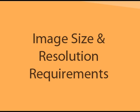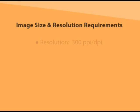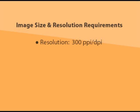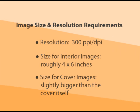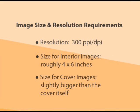First, let's briefly review the requirements, and then we'll go into Photoshop to check for them. If you are submitting images for your book's cover or interior, they need to have a resolution of no less than 300 ppi, or pixels per inch. In addition, images for your interior need to be roughly 4 by 6 inches or larger. If they're for the cover, they should be slightly bigger than the cover itself, adding at least an eighth of an inch to the cover's top, bottom, and outside edge.